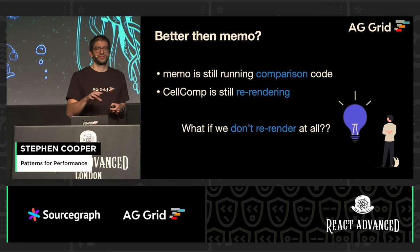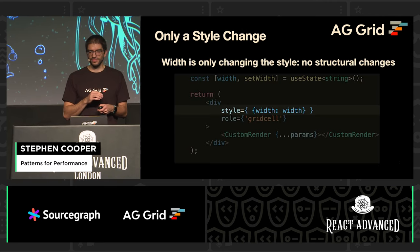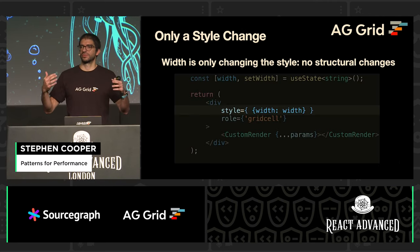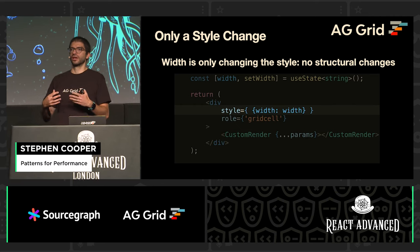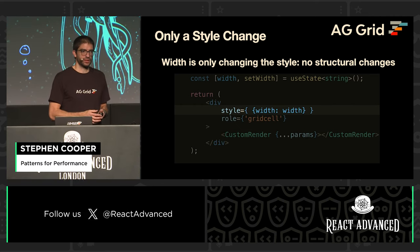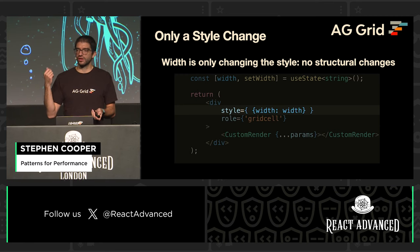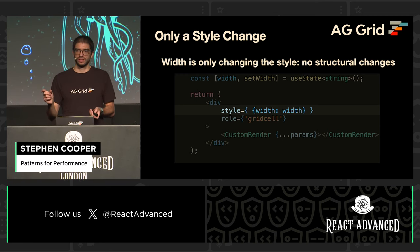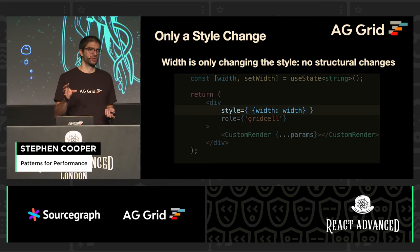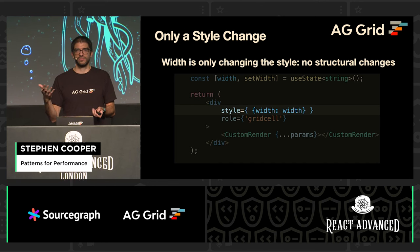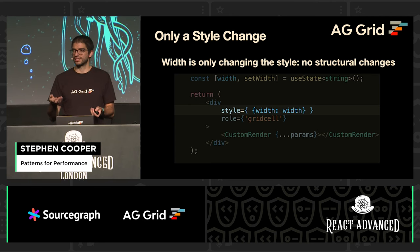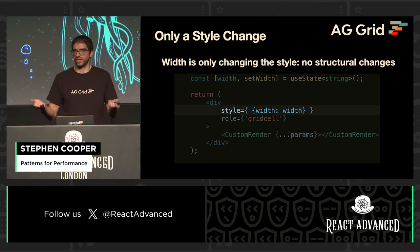What if we don't re-render at all? This is where it takes stepping back to look at our application code and think, what is actually changing here? If we look at this line of code, the only thing that the width is changing is the style property. So we're not actually making any structural changes to the DOM. When we see this, we think, well, maybe I don't need this in a state hook. Maybe I can actually do this myself — I can access the DOM and change the style property directly.